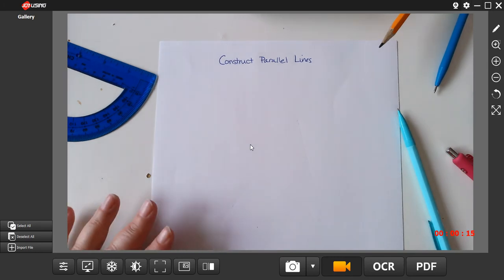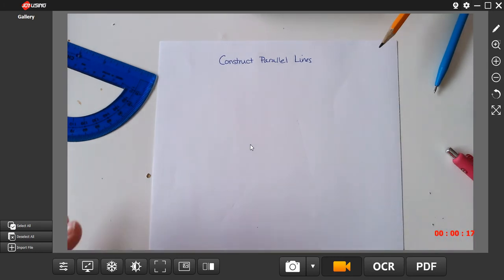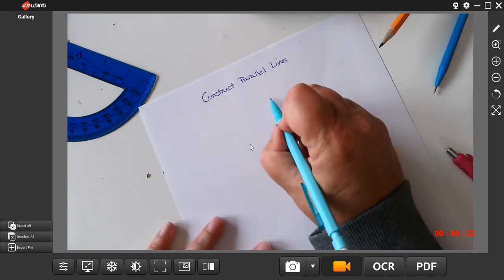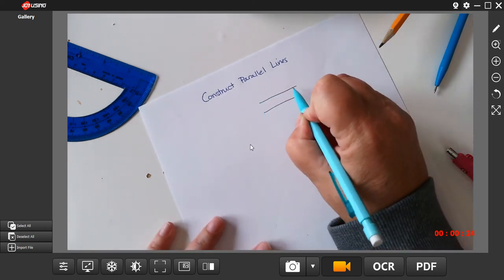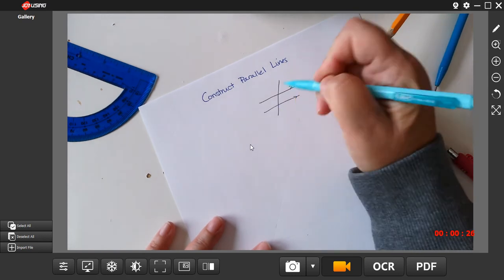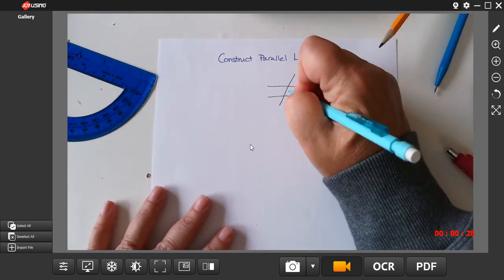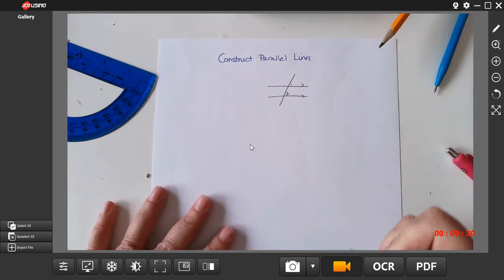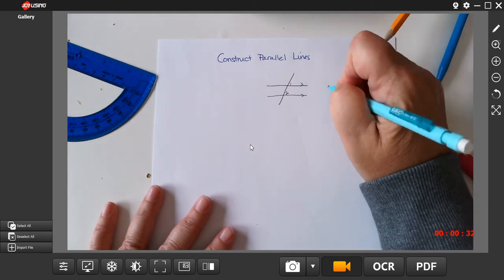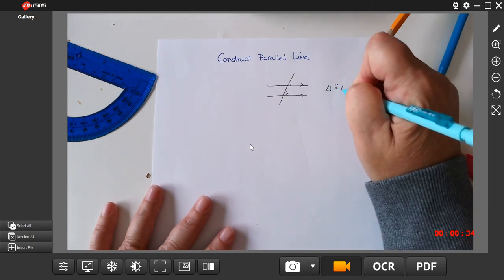So today we're going to learn how to construct parallel lines. I'm going to give you the background behind it, and then we're going to do it. So here's what it's going to be based on. Remember when we had parallel lines and transversals? We talked about how angles 1 and 2 are corresponding angles, and how angle 1 is congruent to angle 2.